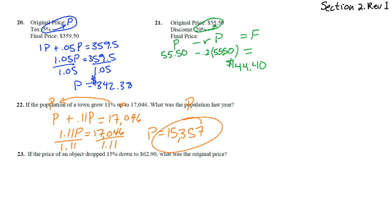Number 23. If the price of an object dropped 15% down to 62.90, what was the original price? So that's our variable. Price of an object drops 15%. And again, that's 15% of what it used to be. Down to, there's our equals 62.9. Now, this 1 minus 0.15, that gives us 0.85P. And that might be a little bit tough if you haven't done that many times. 1 minus 0.15, this is 1.00, like a dollar minus 15 cents.